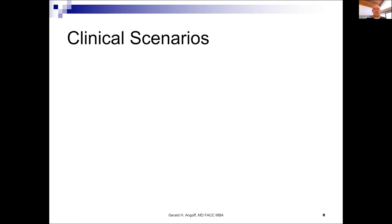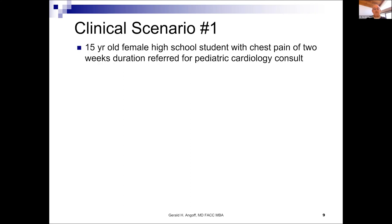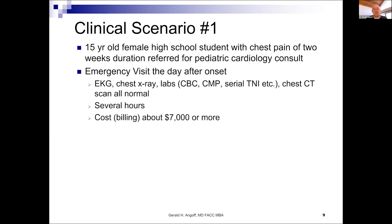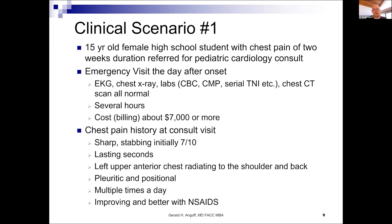I'd like to present some clinical scenarios that will help illustrate the issues involved. The first scenario is a 15-year-old young lady with chest pain of two weeks duration referred for pediatric cardiology evaluation. She'd been in the emergency room the day after onset, had most tests anyone could think of, was there several hours, and the cost was extraordinary — $7,000 or more. The chest pain was described as sharp, stabbing, initially 7 out of 10 intensity, lasting seconds, left upper anterior chest radiating to the shoulder and back, pleuritic and positional, occurring multiple times a day, and improving with NSAIDs.